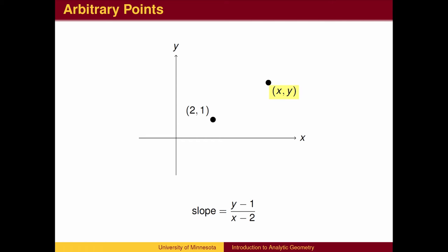The unknown point is labeled as a variable point (x,y). What is the slope to the point (x,y)? It depends on the location of the point. Different points will give different slopes.